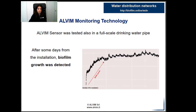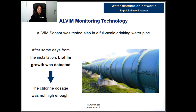Another test was carried out in a full-scale drinking water system. Alvim sensor detected a signal increase, which means biofilm growth. This result indicates that the chlorination applied in the system was not enough to completely kill microorganisms. So, the remaining bacteria produced EPS and biofilm developed.